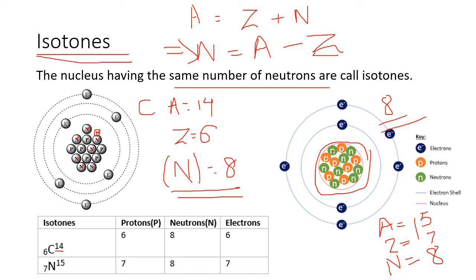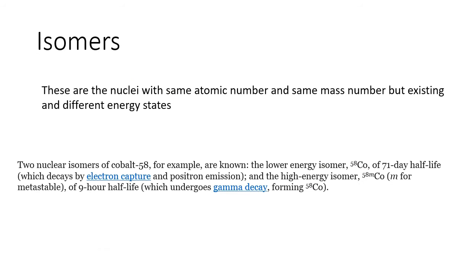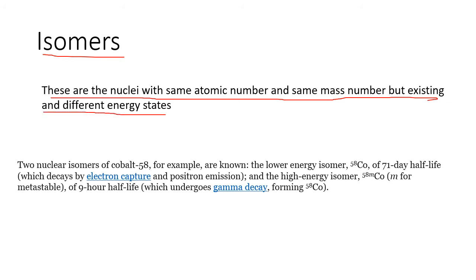The next type is isomers. Isomers are nuclei with the same atomic number and same mass number but existing in different energy states. For example, consider cobalt-58, which has 58 nucleons and is a radioactive element.